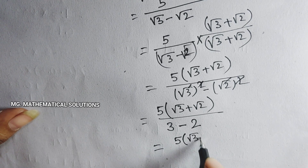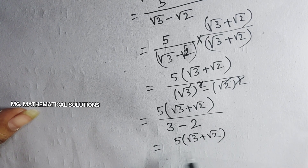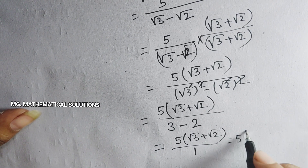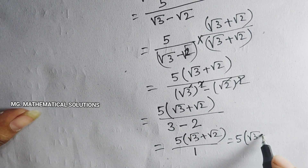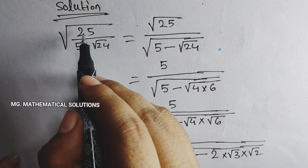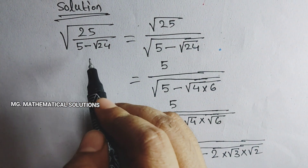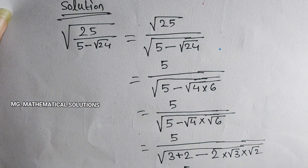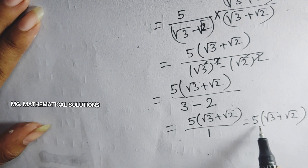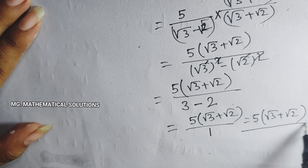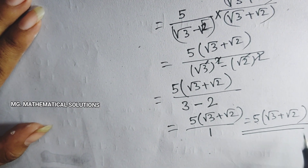So the result is 5 times (root 3 plus root 2) divided by 1, which means root under 25 by (5 minus root 24) equals 5 into (root 3 plus root 2). This is the final answer.